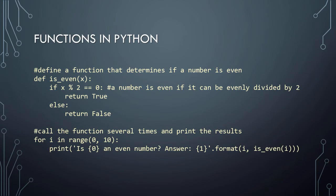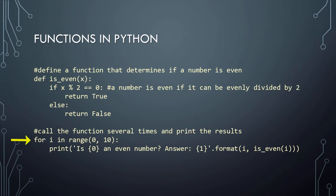In this next example, we're defining a function named 'isEven' that determines if the number passed into the function is even. Here we're using the modulo operator to get the remainder after the input parameter is divided by 2. If the remainder is 0, then we know that the number is even, because by definition a number is even if it can be evenly divided by 2 with no remainder. We then call the function several times from inside a for loop, which runs from 0 to 9, telling us whether each number in that range is even.